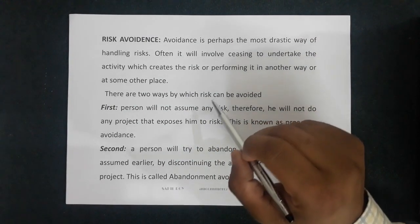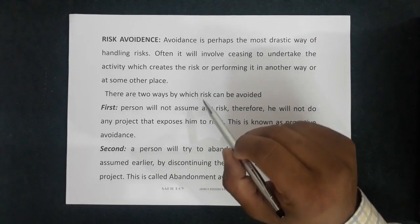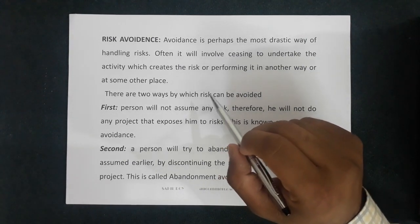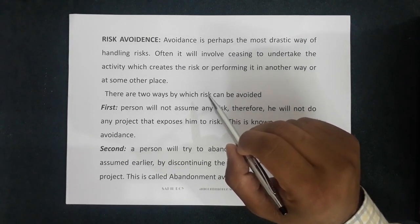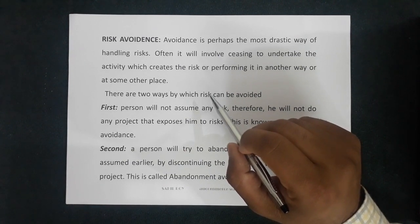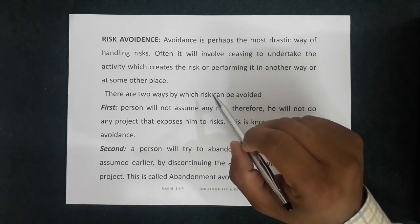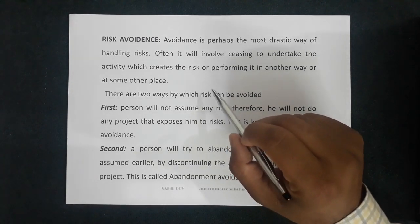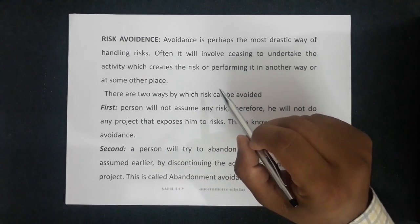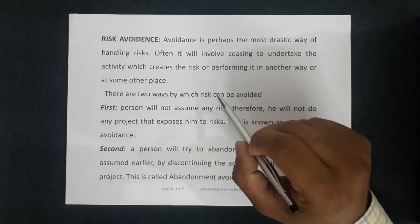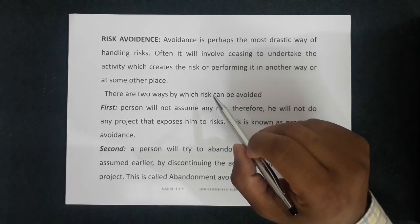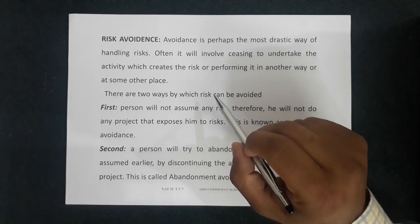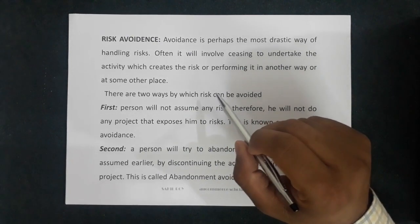Risk avoidance means you do not perform activities that can cause any kind of loss. For example, if you are riding a bike and the bike's brakes have failed, and you know this is a bike whose brakes never work, then you will avoid riding that bike — this is called risk avoidance.